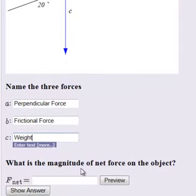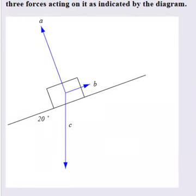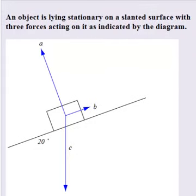Now they ask us, what is the magnitude of the net force on the object? Do you know? Do we know the values? Do we need to know the values of the forces acting on it? Do we need to know the weight? Well, all we need to know is that an object is lying stationary on a slanted surface. According to Newton's first law, an object that is not in motion will stay not in motion unless a net force is acting on it.